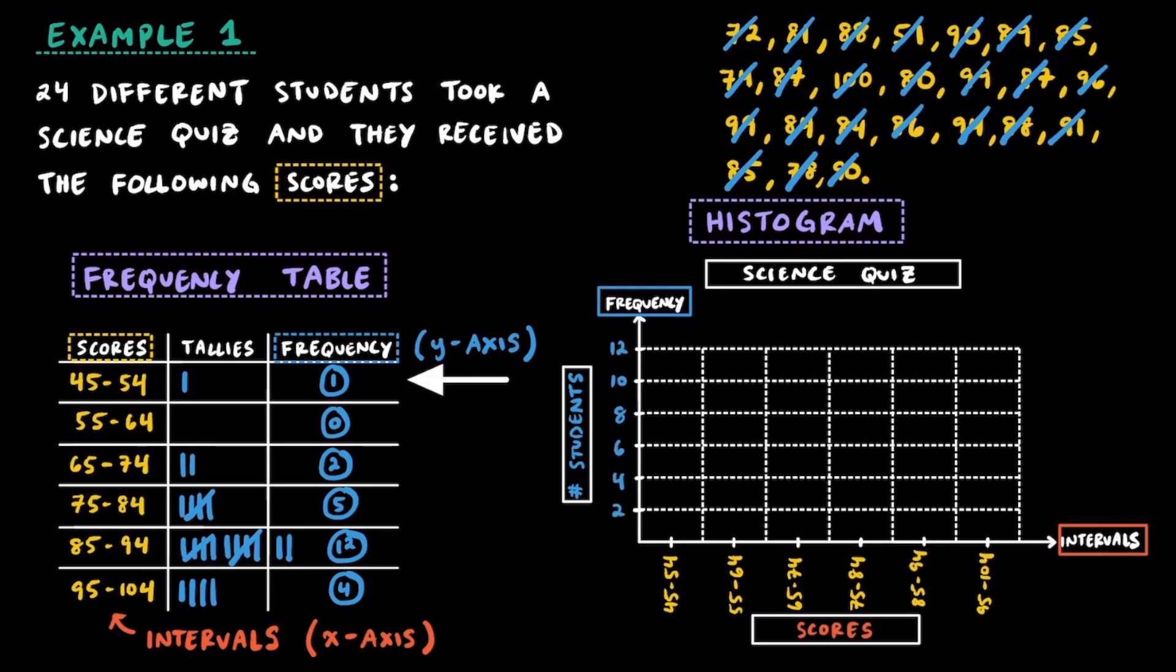We can see that there was one student that got a score between 45 and 54, so go to that interval along the x-axis and draw a bar up to 1 for the frequency for the number of students.